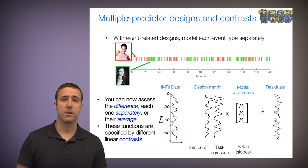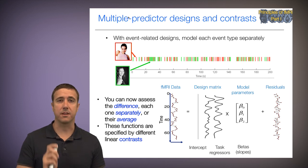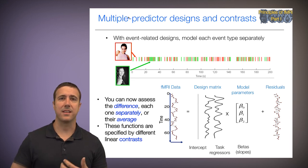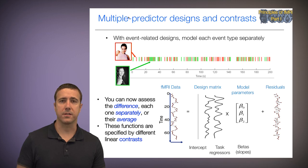In this case, we can flexibly test multiple contrasts on this design matrix. So we can assess the difference between famous and non-famous faces. We can assess each one separately, or we can assess their average. These functions are specified by different linear contrasts across those parameter estimates or betas.